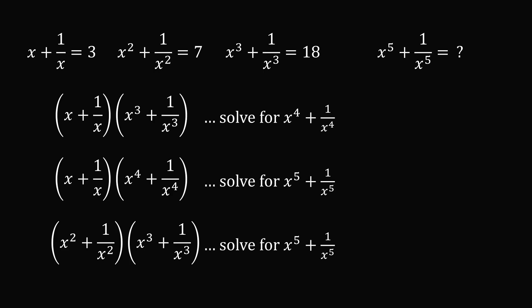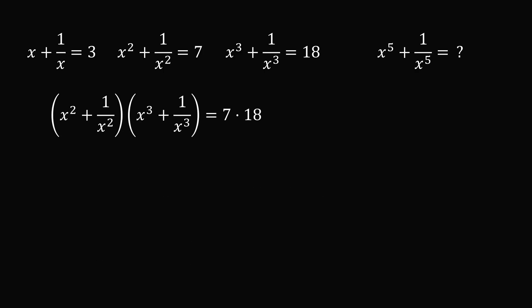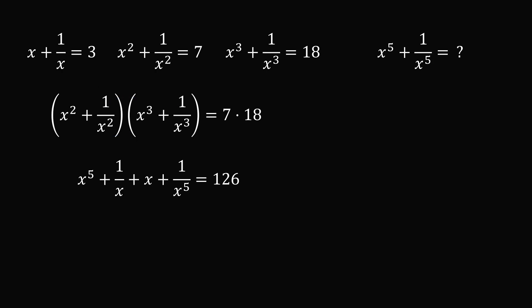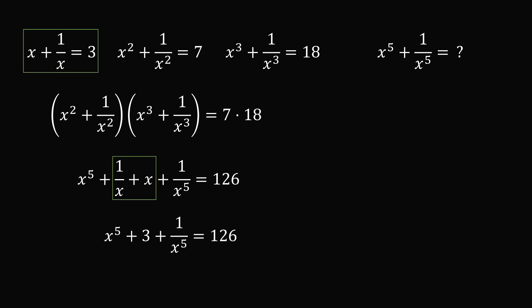Let's go ahead and do it that way. Multiplying those last two equations gives 7 times 18. Multiplying the terms and simplifying, we get x to the power of 5 plus 1 over x plus x plus 1 over x to the power of 5 equals 126. Now 1 over x plus x equals x plus 1 over x, which equals 3. Substituting in and subtracting 3 from both sides gives the answer: x to the power of 5 plus 1 over x to the power of 5 is equal to 123.